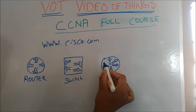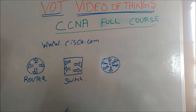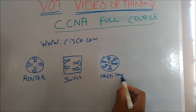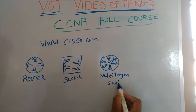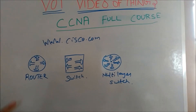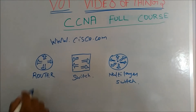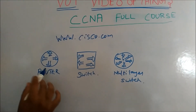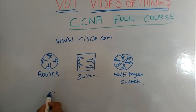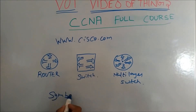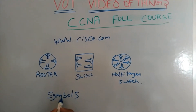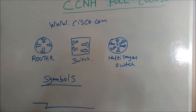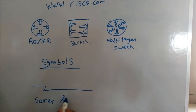This is a multi-layer switch. A router is important in terms and further details. This is a symbol, and this is a series line.